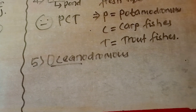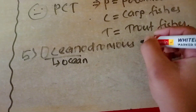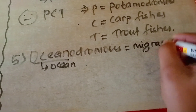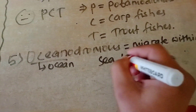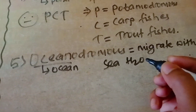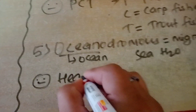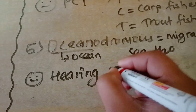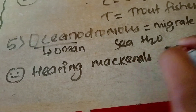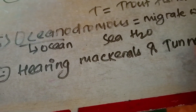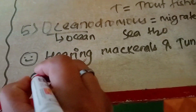The fifth type is oceanodromous. 'Oceano' means ocean — so oceanodromous fish migrate within sea water only. For the examples, use the trick: 'someone is hearing mackerel and tuna.' So the fish names are herring, mackerel, and tuna. These three are examples of oceanodromous fish.